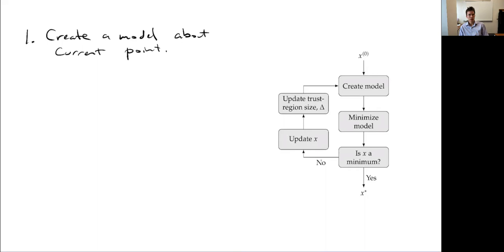A model about the current point suggests a Taylor series, and that's a common way to do it. We could build a local quadratic model — that's the most common approach — but it could be any surrogate model. For a quadratic Taylor series, we'd use our function, gradient, and Hessian at that point, but we could also use previous evaluation points. Since it's built on local information, we believe it to be true only in some local region. Our real function is potentially much more complicated, and this simplified model is only a good approximation nearby.